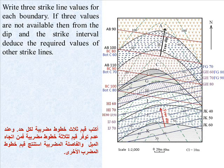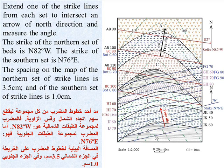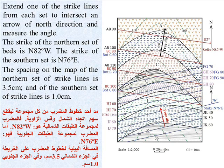Write three strike line values for each boundary. If three values are not available, then from the dip and the strike interval deduce the required values of other strike lines. Extend one of the strike lines from each set to intersect an arrow of north direction and measure the angle. The strike of the northern set of beds is N82°W; the strike of the southern set is N76°E.